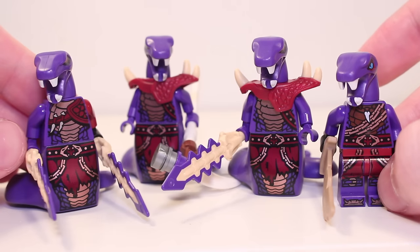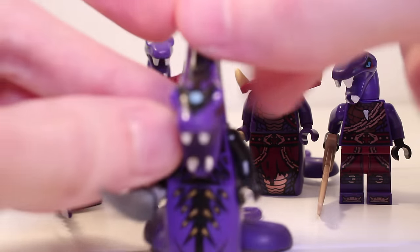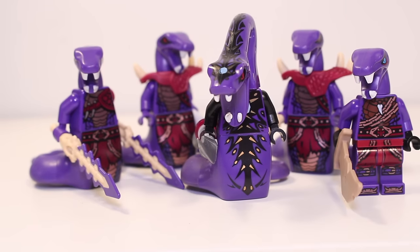Of the Anacondrai we did get though, we can still form a small army of four, which is bumped up to five if you want to throw in Pythor, finally giving him his own tribe.